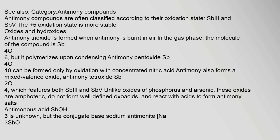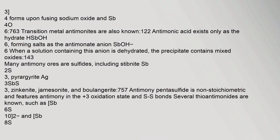Antimony compounds are often classified according to their oxidation state, Sb(III) and Sb(V). The +5 oxidation state is more stable. Antimony trioxide is formed when antimony is burnt in air; in the gas phase the molecule is Sb4O6, but it polymerizes upon condensing. Antimony pentoxide Sb4O10 can be formed only by oxidation with concentrated nitric acid. Antimony also forms a mixed valence oxide, antimony tetroxide Sb2O4, which features both Sb(III) and Sb(V). Unlike oxides of phosphorus and arsenic, these oxides are amphoteric, do not form well-defined oxoacids, and react with acids to form antimony salts.